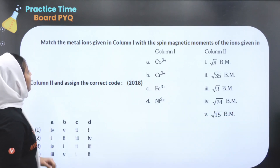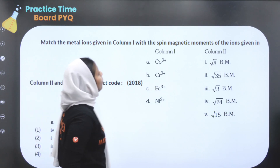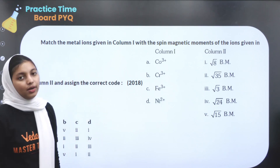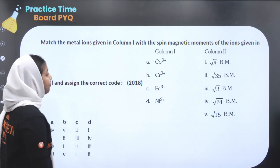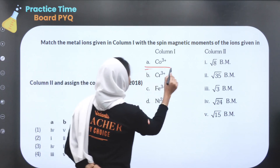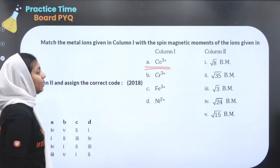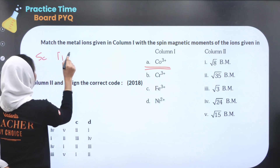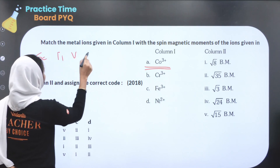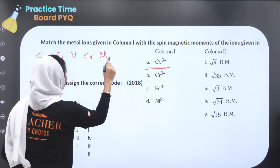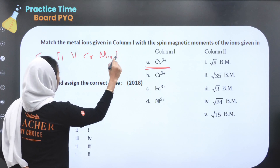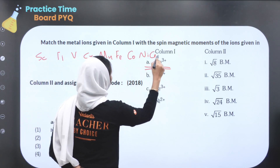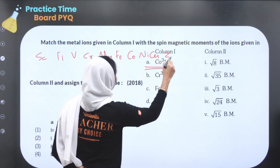Next question: Match the metal ions given in Column 1 with the spin magnetic moment of the ion given. The transition metals listed are: Co³⁺, scandium, titanium, vanadium, chromium, manganese, iron, cobalt, nickel, copper, and zinc.